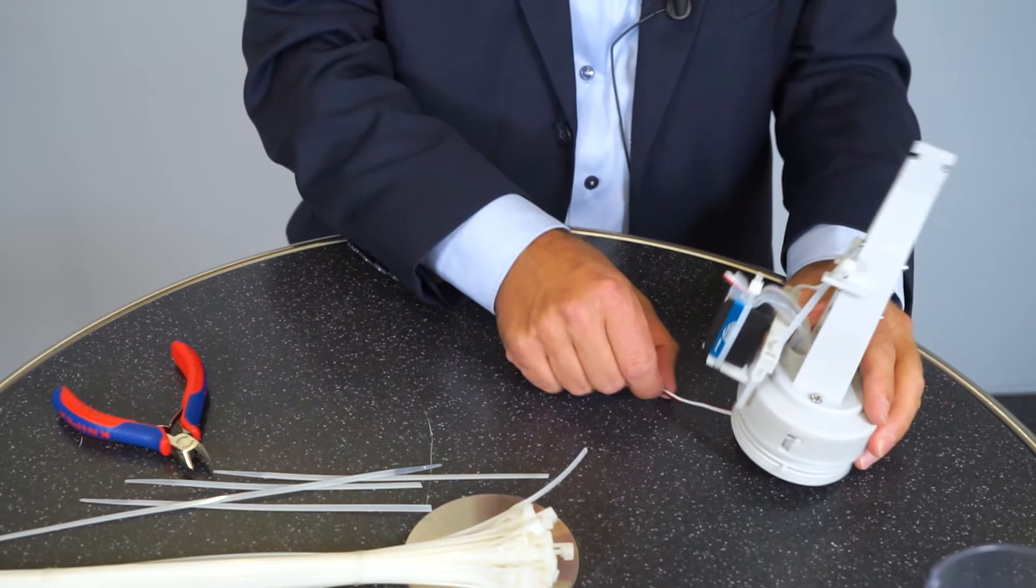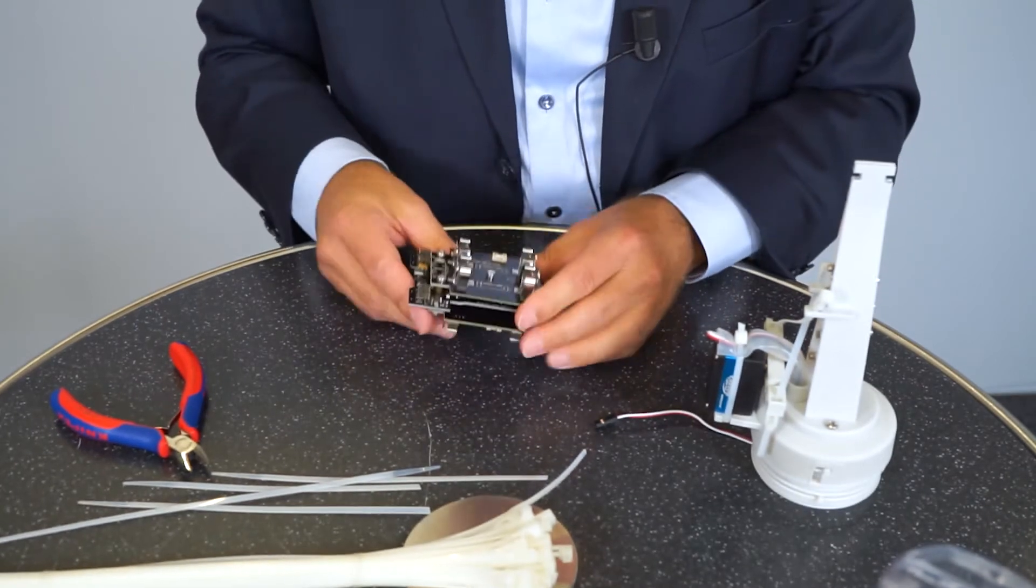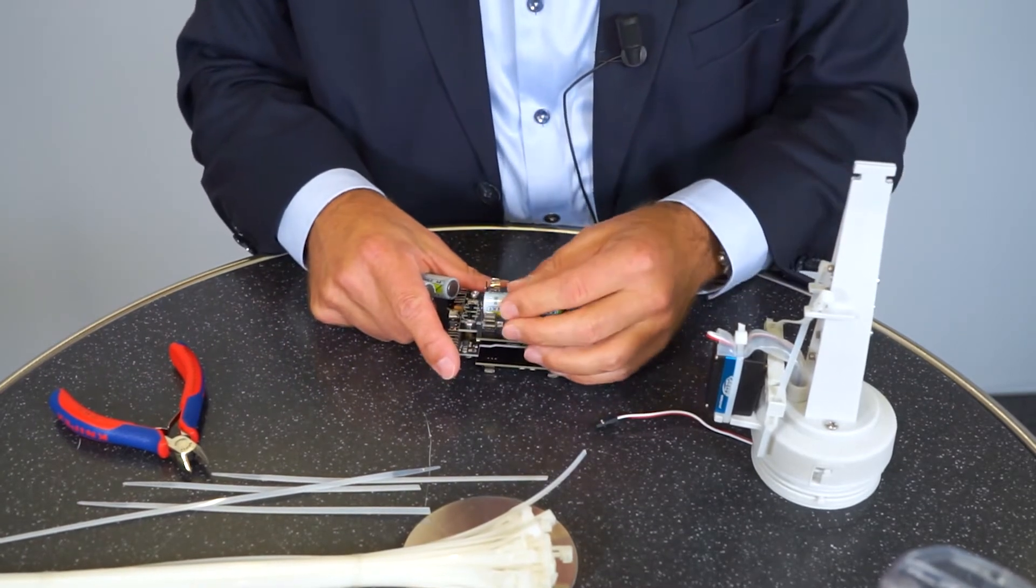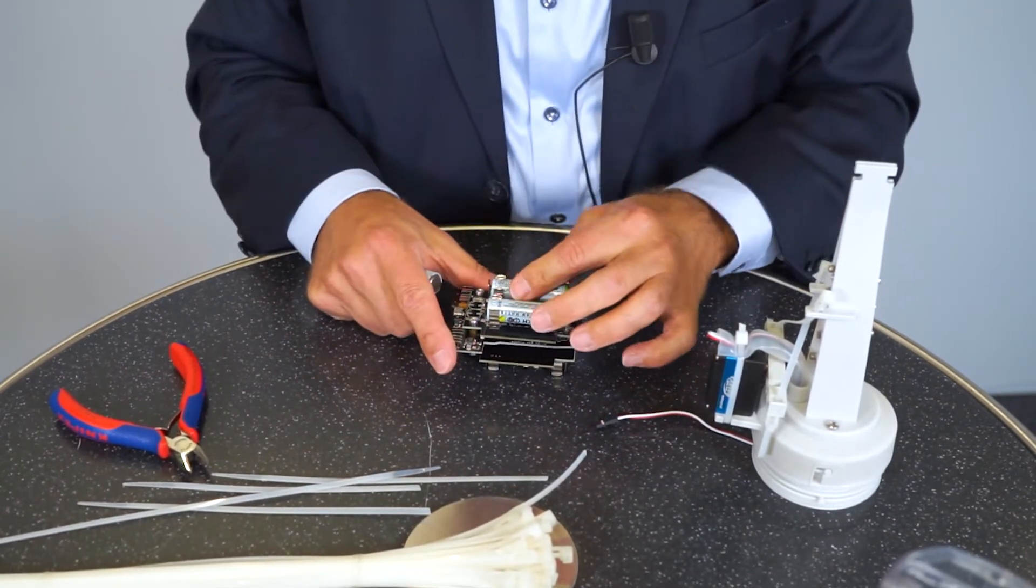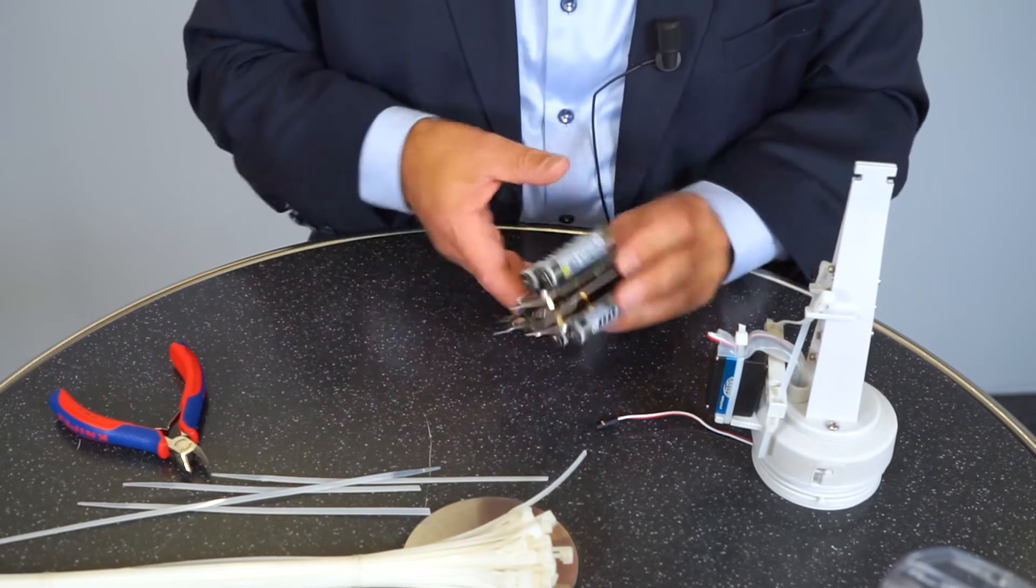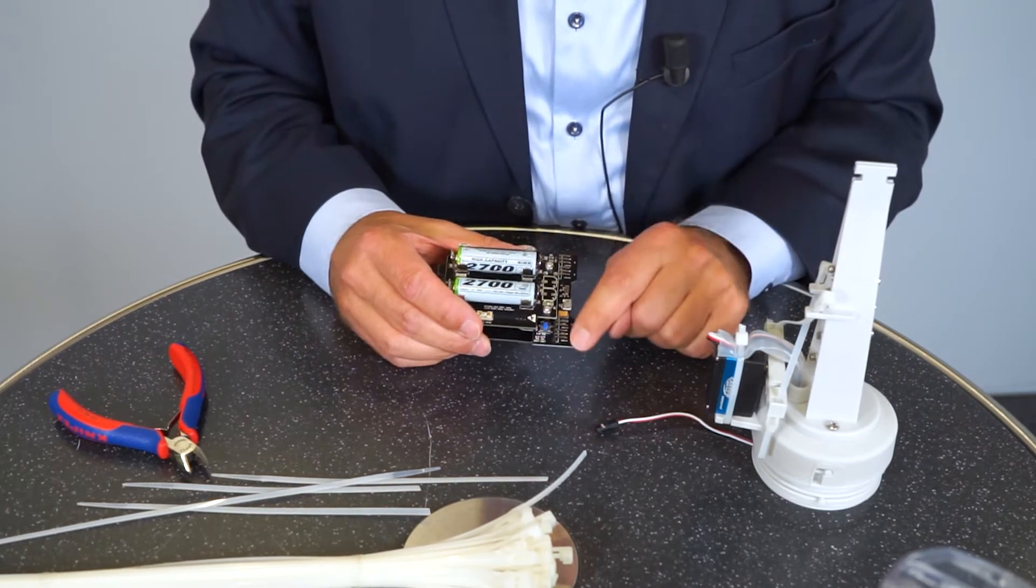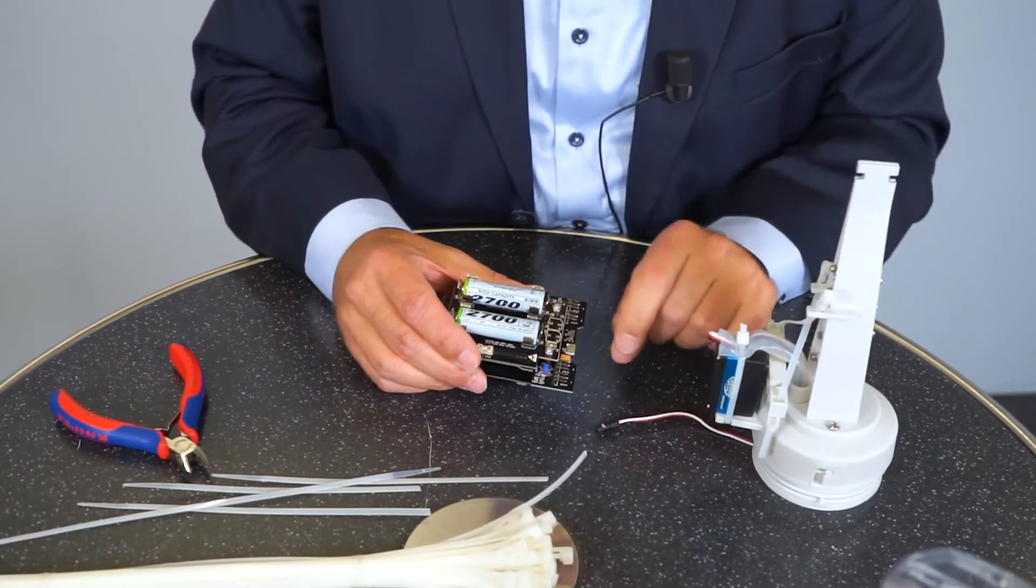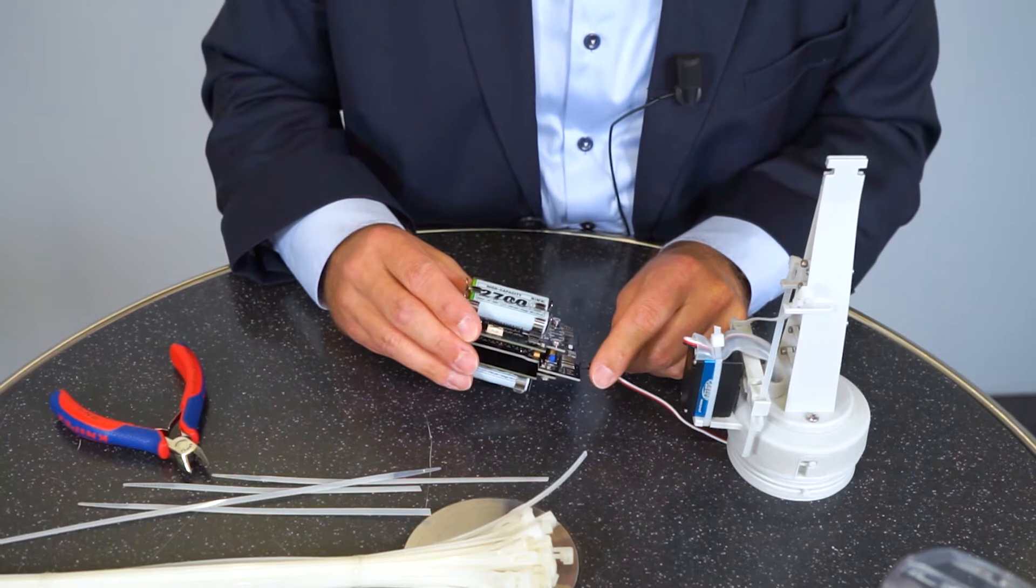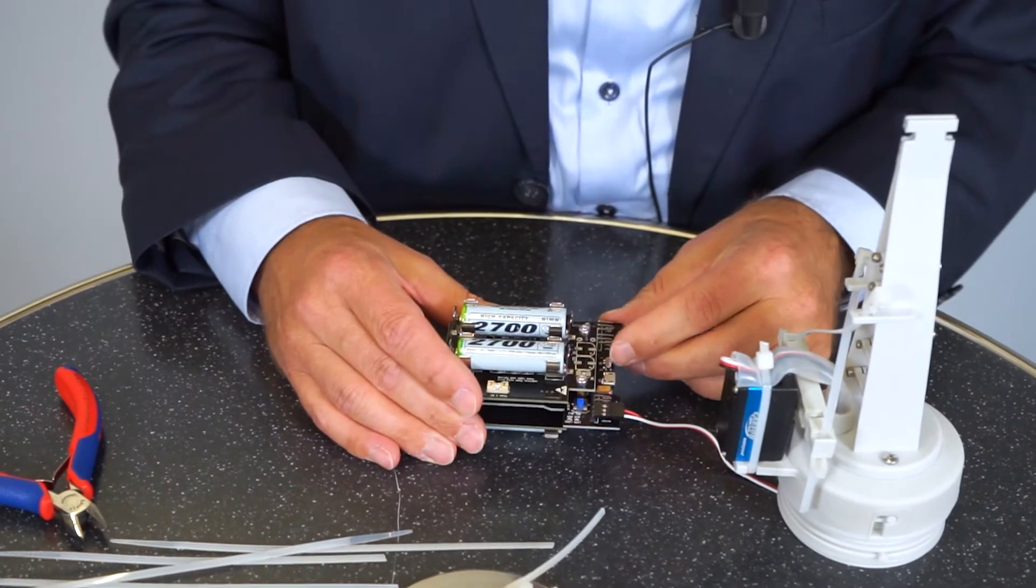Now we need to connect the controller with the servo to test if it works. We get the controller out of the body and put batteries in the controller to power it. You can use standard triple A cells, could be batteries or accumulators. Then you have to connect the servo with the controller with these outlet ports here. You have four sets, you can choose either one, but make sure that the black cable of the servo is connected with the pin where black is indicated.